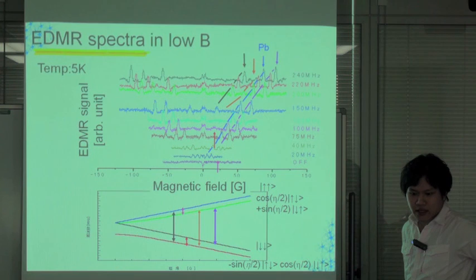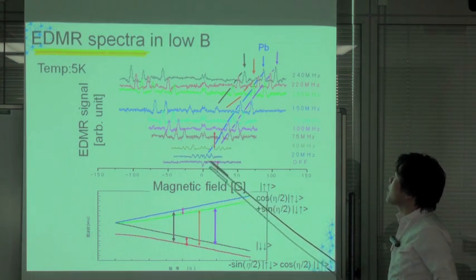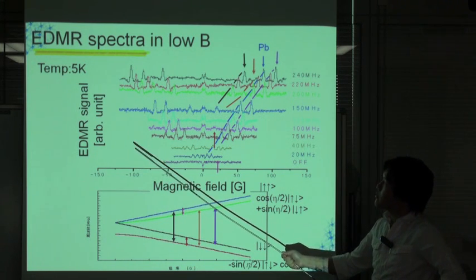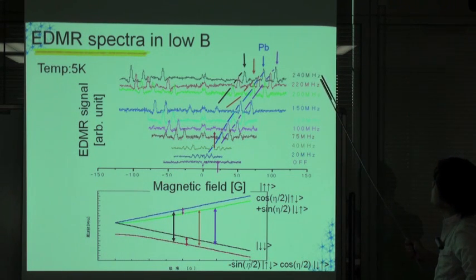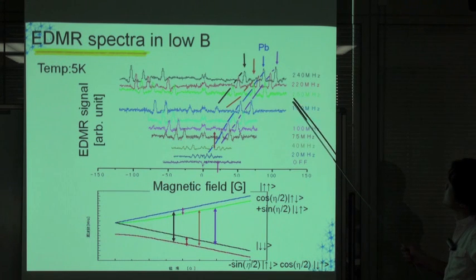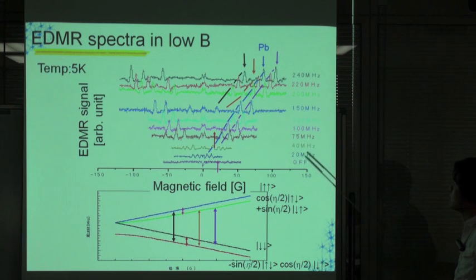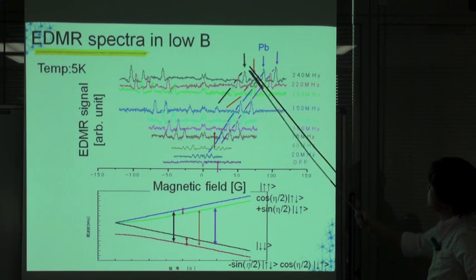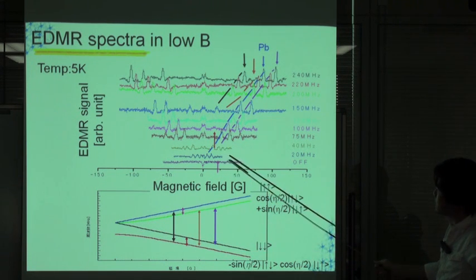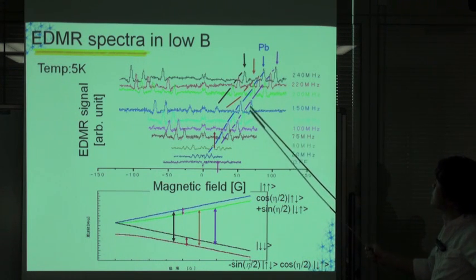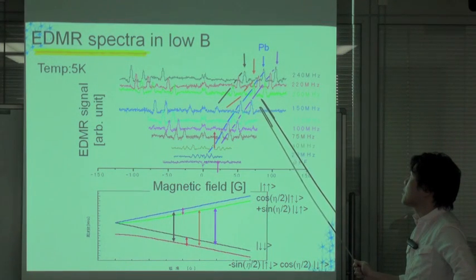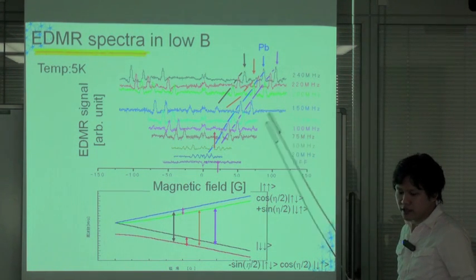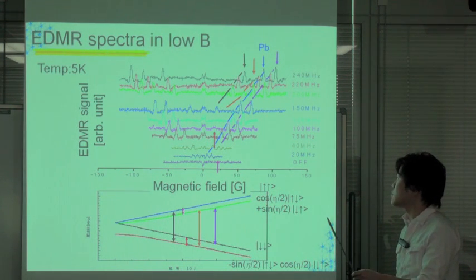Next we show the EDMR spectra at different RF frequencies. The horizontal axis is magnetic field in Gauss and the vertical axis is EDMR signal in arbitrary units. This experiment was done at 5K, with measurements at 240 MHz, 220 MHz, 200 MHz, 150 MHz, and other frequencies. The purple peak corresponds to one transition, the orange peak to another, the black, red, and pink peaks to further transitions, and the peaks indicated by blue correspond to the paramagnetic resonance of PV center — a paramagnetic defect at the interface between silicon and silicon dioxide. We have observed a total of six transitions successfully.